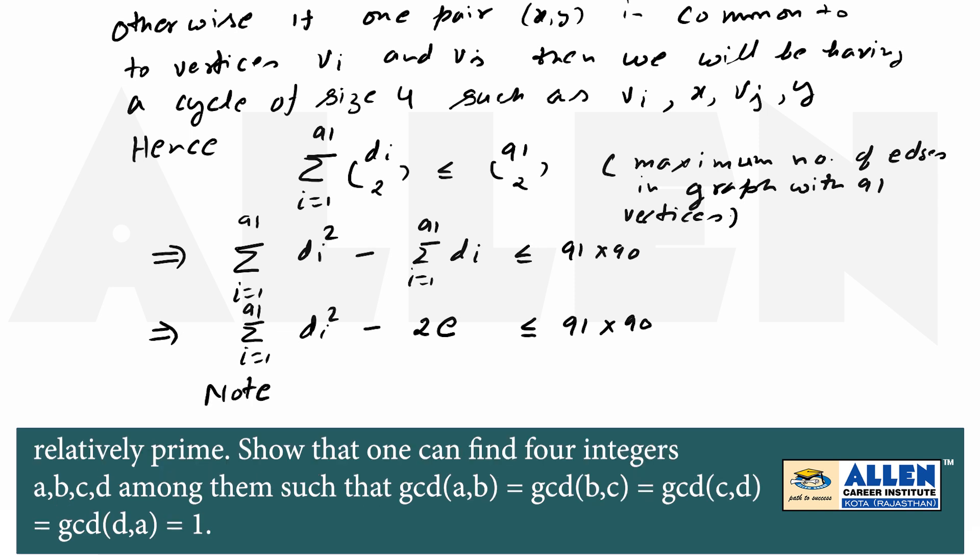Note that sigma i from 1 to 91 di equal to 2E.